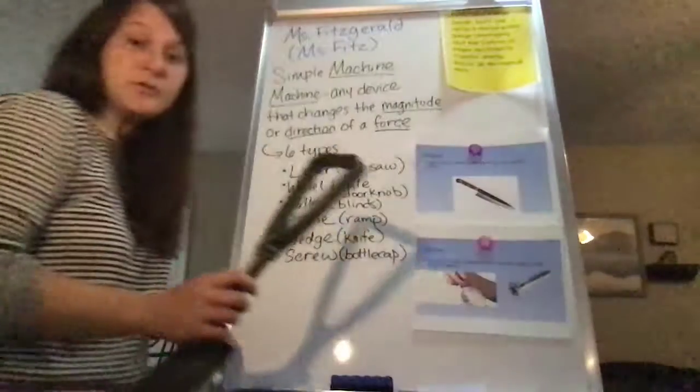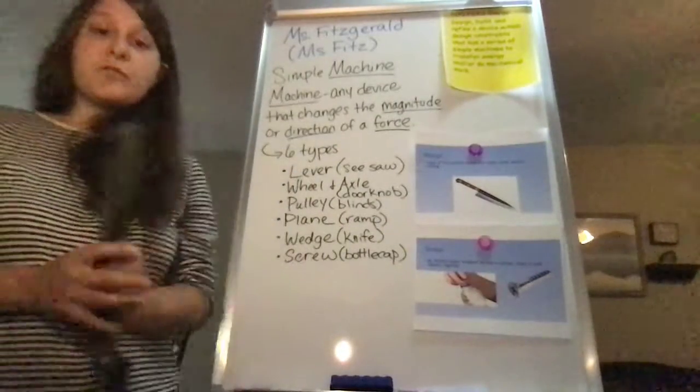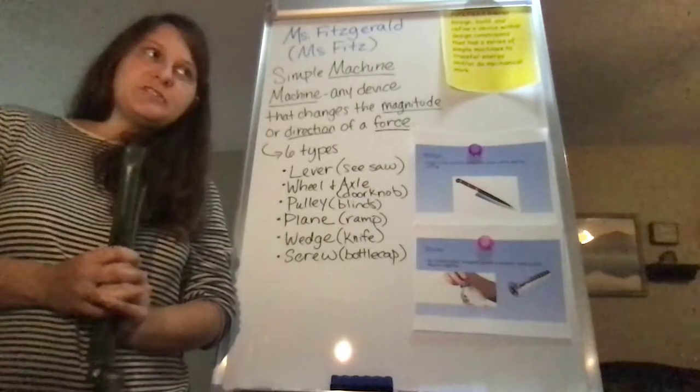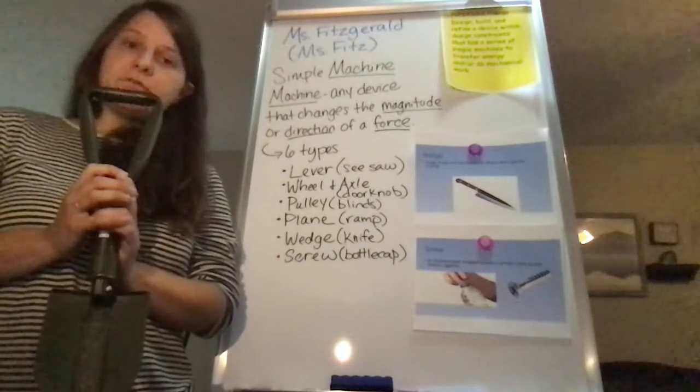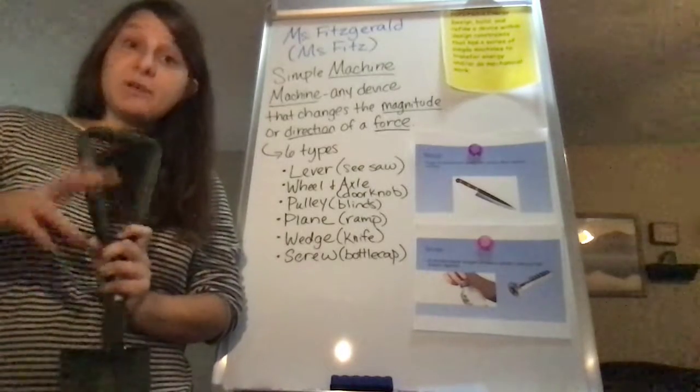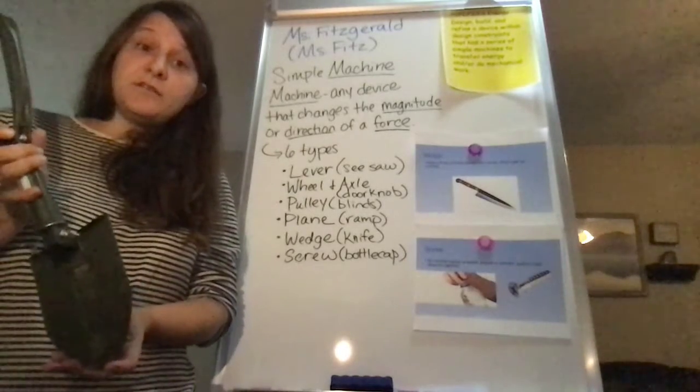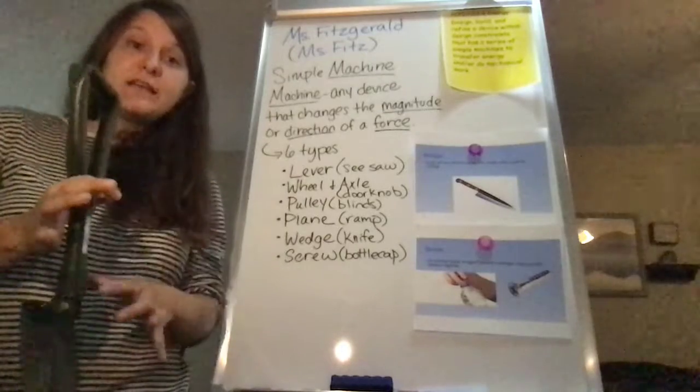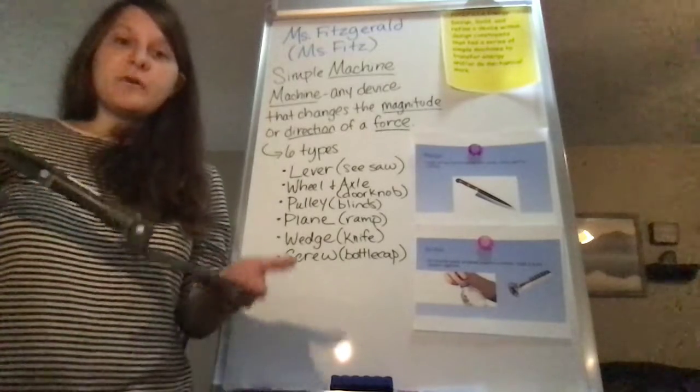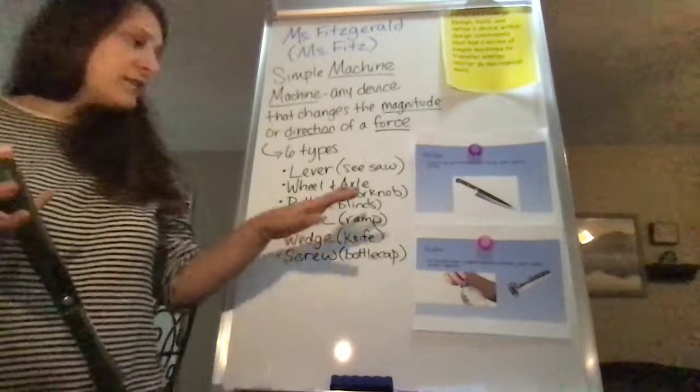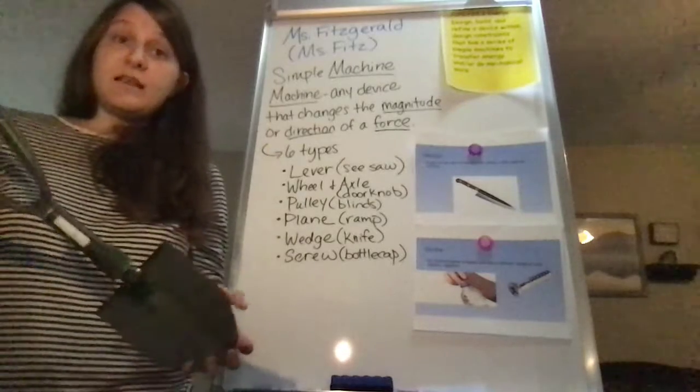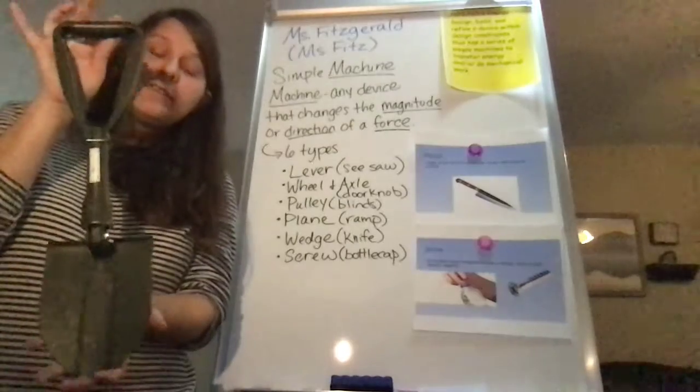I also want to provide the example of a shovel. So if you're struggling, if you don't know what kind of machine something is, think of a shovel, okay? A shovel is actually a combination of two simple machines. So here we have a wedge because it's pointed at the end, okay? And then this bar right here is a lever. So even though something doesn't look like any of these pictures that I showed you doesn't mean that it's not a machine, right? So think about this.